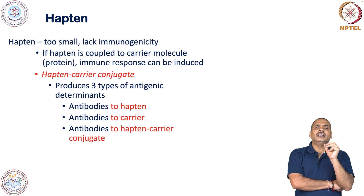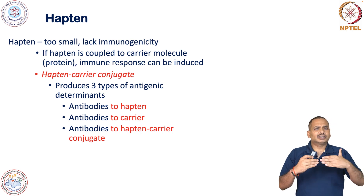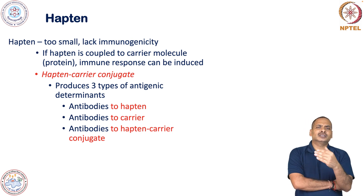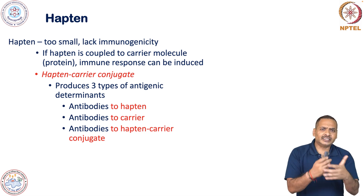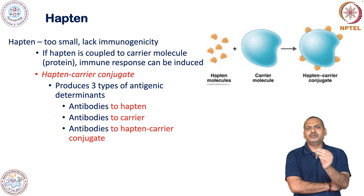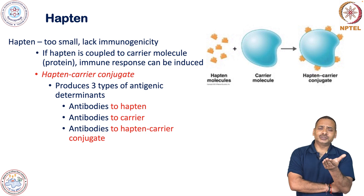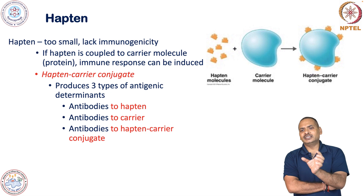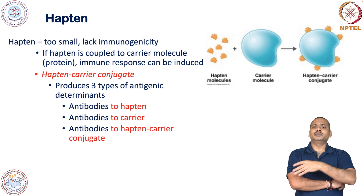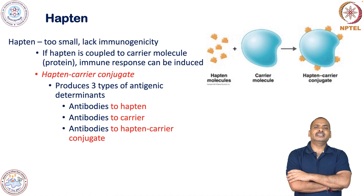The third type of antibody can be generated against the junctional point between hapten and carrier molecule. Once the carrier and hapten molecule is injected, these kinds of antibodies can be generated. Here is a very simple schematic: the hapten is a too-small molecule and cannot induce the immune response. If it is attached with the carrier molecule, there will be a hapten-carrier conjugate, and I have another schematic that will make things far more clear.